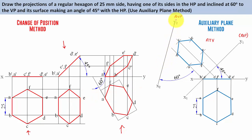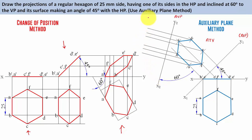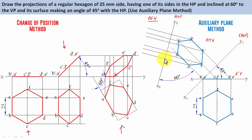Project lines from all six points — A, B, C, D, E, F — so they intersect line X2Y2 at 90 degrees. To construct the auxiliary front view, use the existing front view as reference. The distance of A-dash B-dash from X1Y1 is zero, so point A lies right on X2Y2. Similarly, point B also lies on X2Y2.